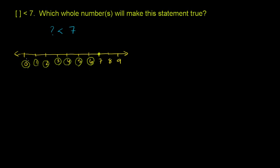So you could put any of these numbers here and the statement would be true. You could write 0 is less than 7, that's true. You could write 3 is less than 7, that's true. You could write 6 is less than 7, and that would be true.